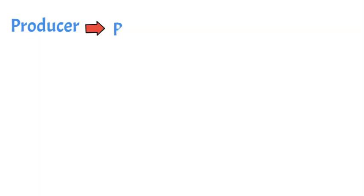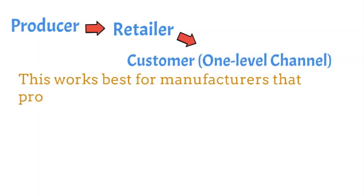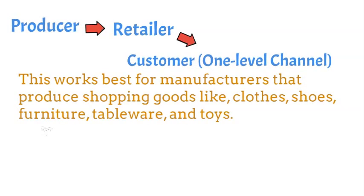One-level channel: Producer to Retailer to Customer. This works best for manufacturers that produce shopping goods like clothes, shoes, furniture, tableware, and toys.